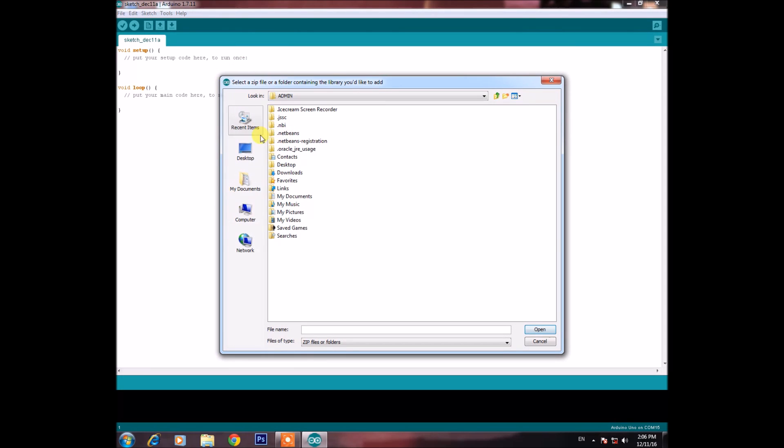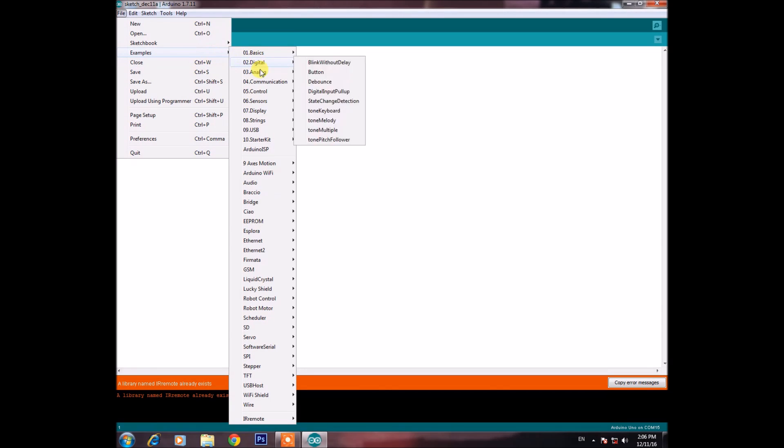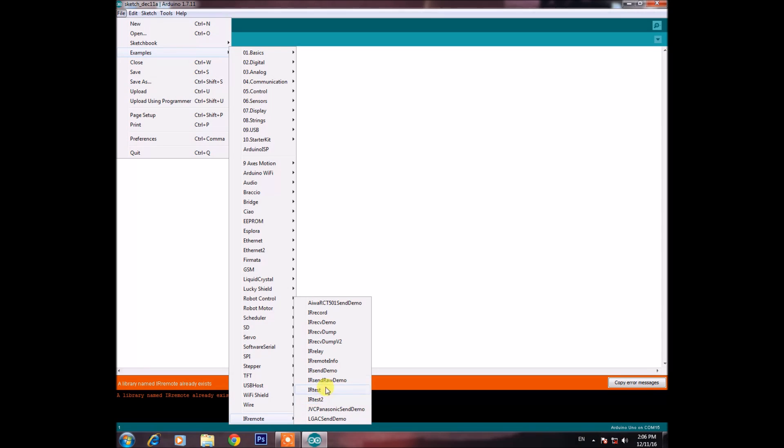And add library. I have it on the desktop here. IR remote open. I already have it, so I won't need to do it. Now quickly go to the examples here. And you'll find the IR remote here. What you have to do is, you have to upload the IR Rec Demo.